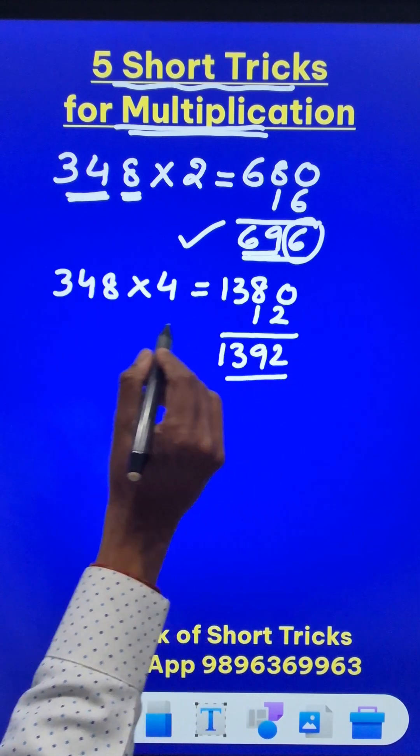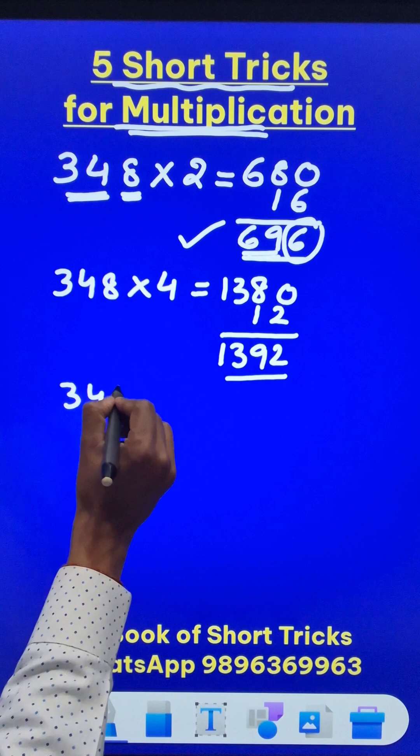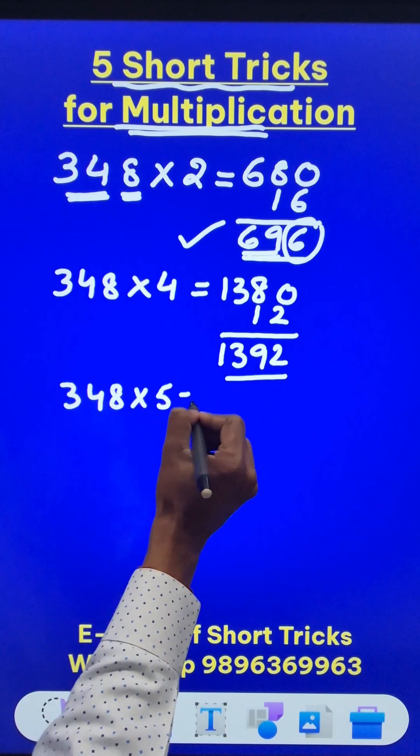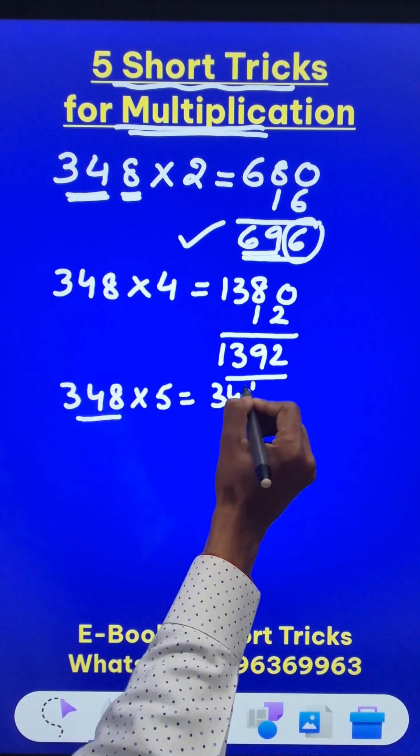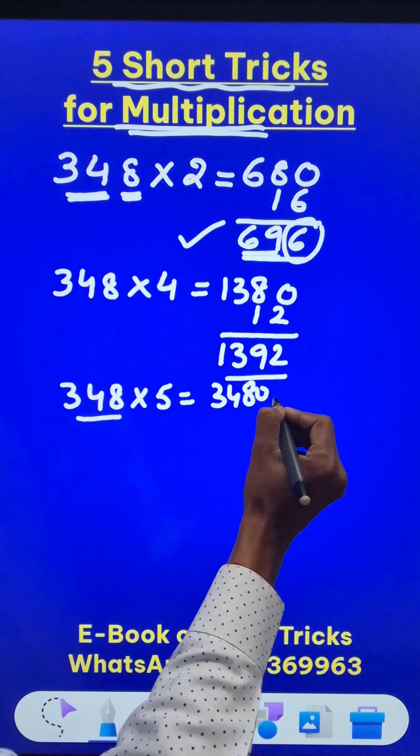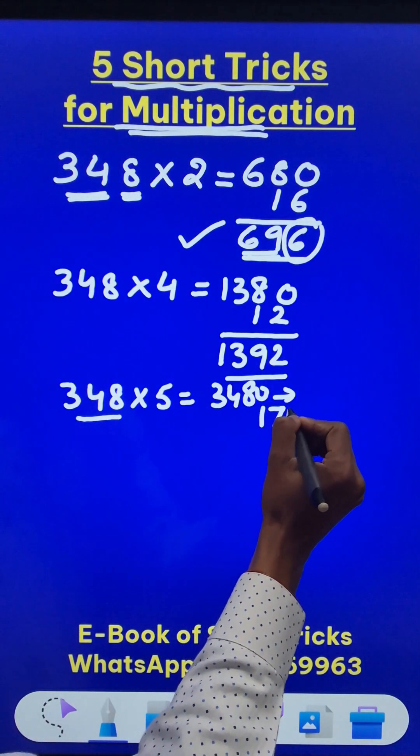Likewise, if you have to multiply the same number 348 by 5, just put a 0, 3480, and take half of this number. You get the answer as 1740.